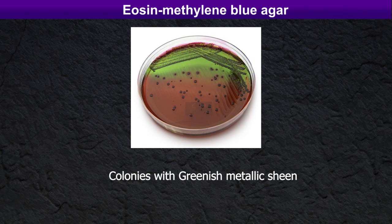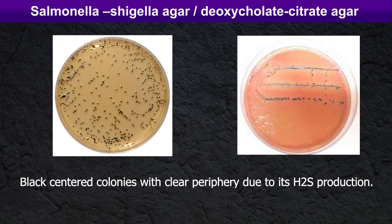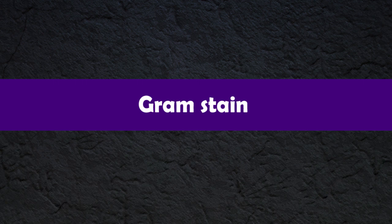If we culture on Salmonella-Shigella agar or deoxycholate citrate agar, black centered colonies with clear periphery are seen due to its hydrogen sulfide production. After observing colony morphology, we can perform the Gram stain. Citrobacter cells are Gram-negative rods arranged singly, in pairs, or in short chains with rounded edges. Similar to other lactose fermenting coliforms, Citrobacter is oxidase negative and catalase positive.